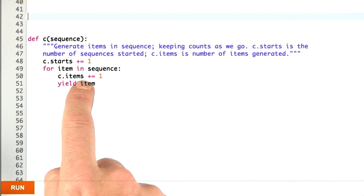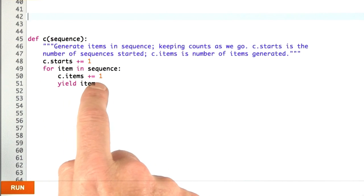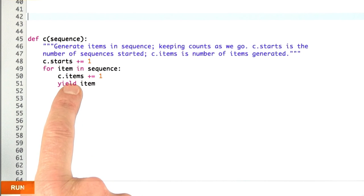And so we don't necessarily go through every item in the sequence. We'll just have just the right number of counts per item. And so this will give us the right number of starts and the right number of items. We can do that because we control the time of execution because this is a generator function and not a regular function.